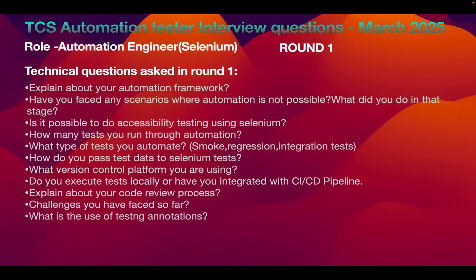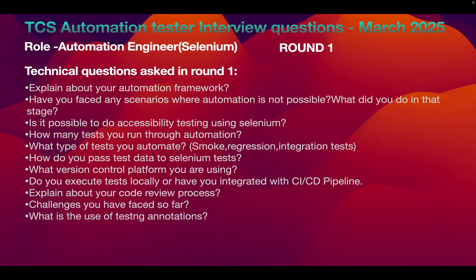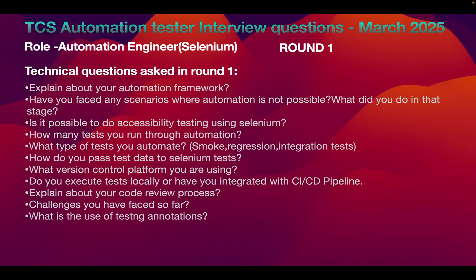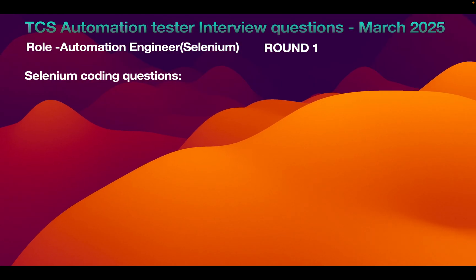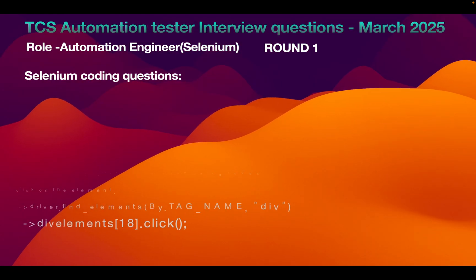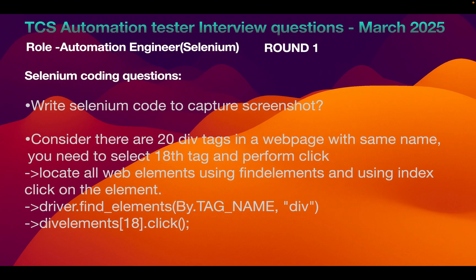What are the challenges you have faced so far in automation? For example, difficulty identifying dynamic web elements or automating a particular flow — explain those as challenges. What is the use of TestNG annotations? They make our code more readable. Explain the annotations you are using and their usage.